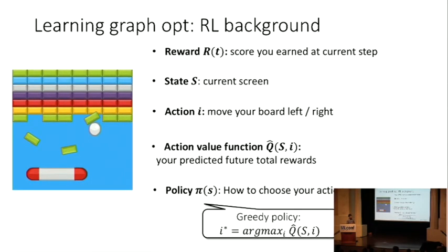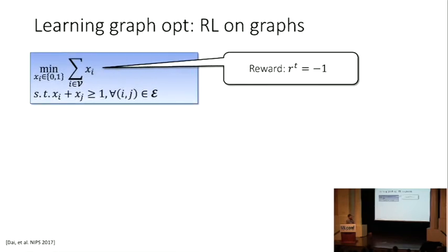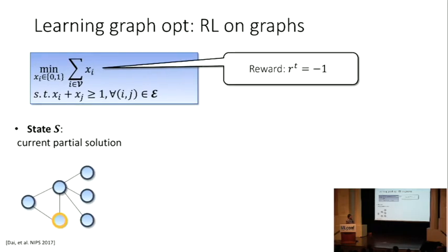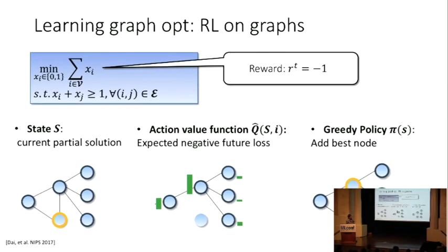Suppose if you have a very perfect action value function, then you can simply use a greedy policy, which means at each time point, I only pick the action which can maximize my future total expected reward. Similar on graph case, for example, the vertex cover, our objective is to minimize the number of nodes we picked. So the reward is simply a constant, which is negative one. This means each time you made an action, you will get a constant penalty one or reward negative one. The state is simply the currently partially solved solution, which contains the node you already picked and the node you haven't picked yet. The action value function is on the rest of the nodes. We simply use a greedy policy because we assume we have learned such kind of a perfect action value function, which means each time we only pick the best node.